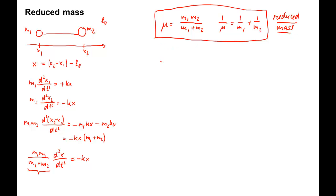With this we finally get the equation of motion that looks like mu d squared x dt squared equals minus kx.